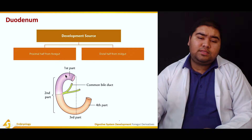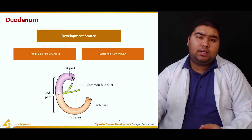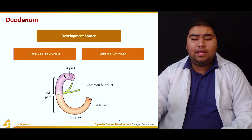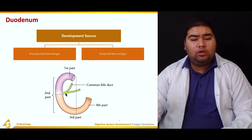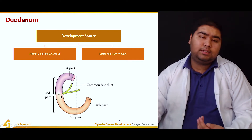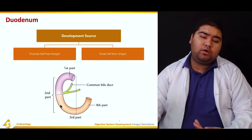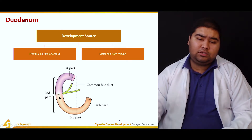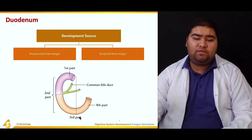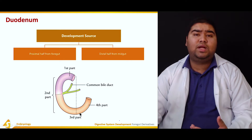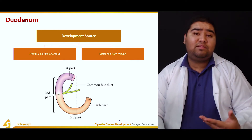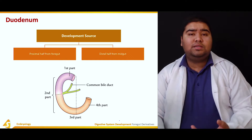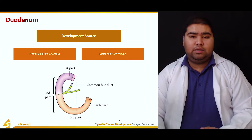The first part of the duodenum is the upper segment of the C, the upper leg of the C. The second part extends to the opening of the common bile duct. Distal to the opening of the common bile duct is the third part, and finally we have the fourth part, the terminal segment. These are the functional parts, as opposed to the developmental parts discussed previously.